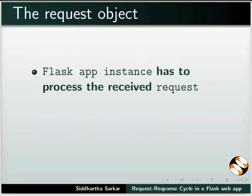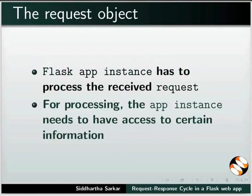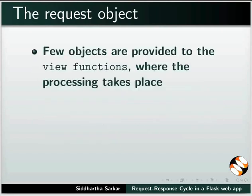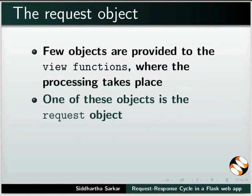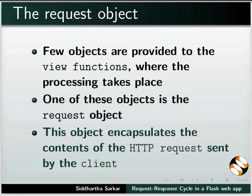The Flask app instance has to process the received request. For processing, the app instance needs to have access to certain information. A few objects are provided to the view functions where the processing takes place. One of these objects is the request object.